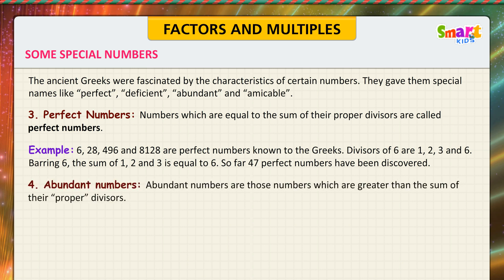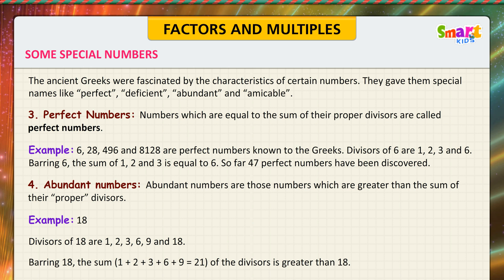Abundant Numbers: Abundant Numbers are those numbers which are greater than the sum of their proper divisors. See the example. 18. Divisors of 18 are 1, 2, 3, 6, 9, and 18. Barring 18, the sum 1 plus 2 plus 3 plus 6 plus 9 is equal to 21. The sum of the divisors is greater than 18.